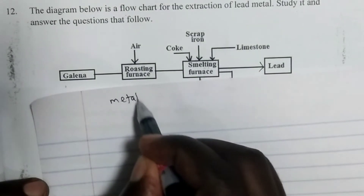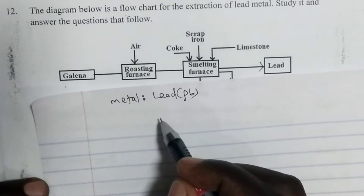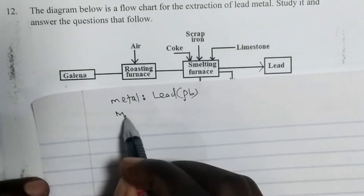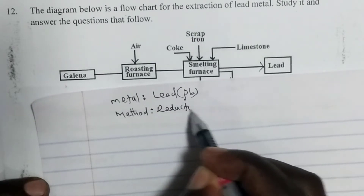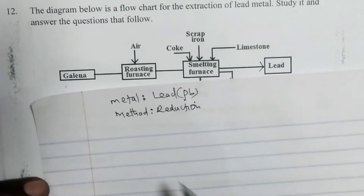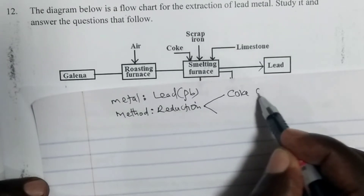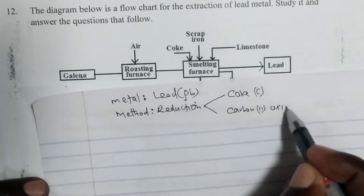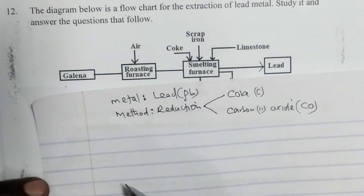The metal we are talking about is lead metal, and lead metal is a metal that lies in the middle of the reactivity series. Metals that lie in the middle of the reactivity series are extracted using the reduction method. Under reduction, we use reducing agents — in this case we can either use coke, which is carbon, or we use carbon monoxide (CO), which is the main reducing agent used in the extraction of metals.